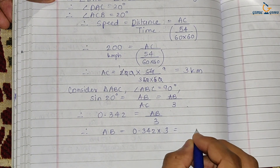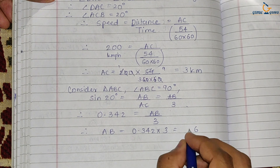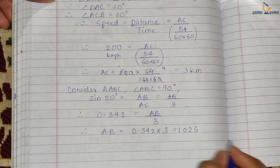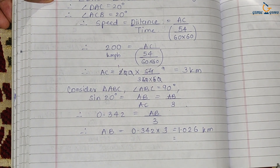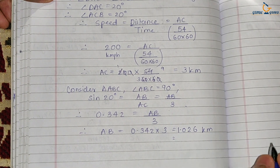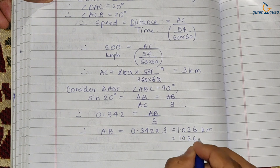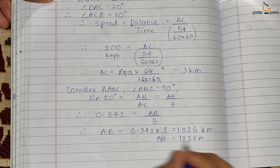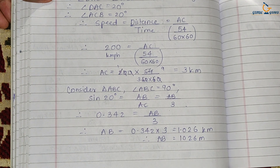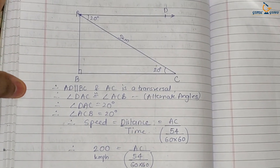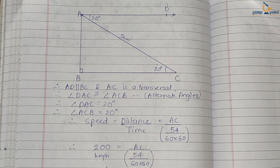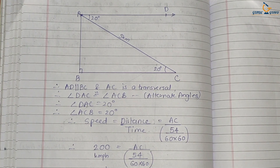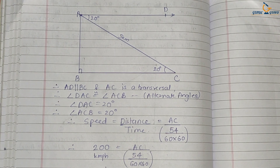After calculating 0.342 × 3, we get 1.026 kilometers, which is 1026 meters. So the height at which the plane started landing is 1.026 km or 1026 meters. Once you draw the diagram, the question becomes very simple. I hope you have understood this concept — please subscribe to my channel, share it with your friends, and do not forget to like this video. Thank you so much for watching.